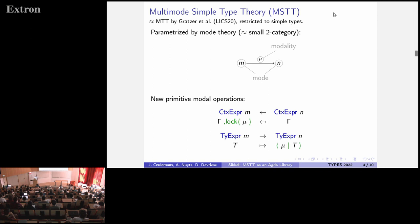And the modalities will give rise to new primitive type constructors to transport types and terms from one mode to the other. So more concretely, if we have a modality mu from mode M to a mode N, we get a modal type constructor that takes a type T at mode M and produces a type mu T at mode N. And in the reverse direction, we get also a lock operation on contexts, which you can think of as a left adjoint of this modal type constructor.